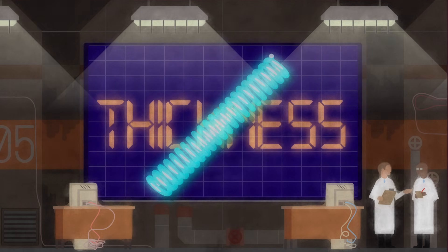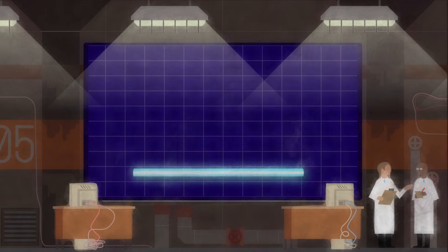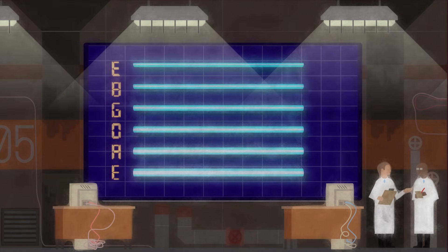Typical guitar strings are all the same length and have similar tension, but vary in thickness and density. Thicker strings vibrate more slowly, producing lower notes.